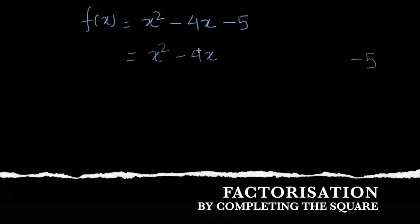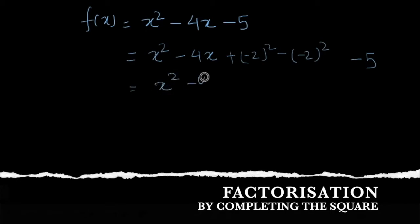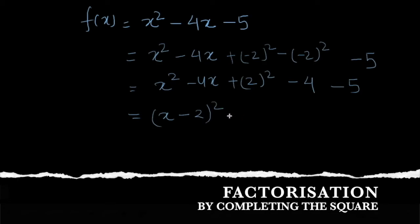The constant to add and subtract is the square of half the coefficient of x. The coefficient of x is -4, so half of that is -2. We add and subtract (-2)², which is +4, so the net effect is 0. This gives us x² - 4x + (-2)² - (-2)² - 5, which simplifies to (x - 2)² - 4 - 5 = (x - 2)² - 9, where 9 can be written as 3².